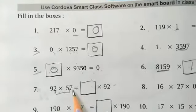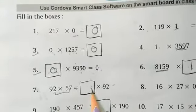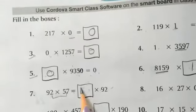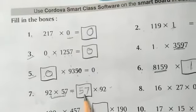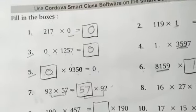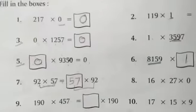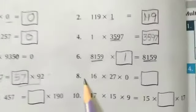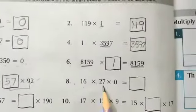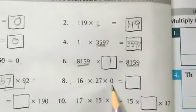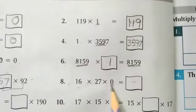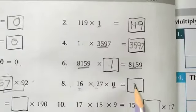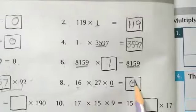Seventh question: the two sides are equal, so we write 57 because both sides are equal. Eighth question: 16 × 27 × 0 equals 0, because any number multiplied by 0 is 0.